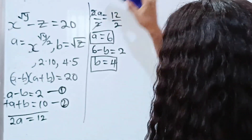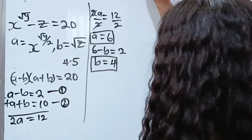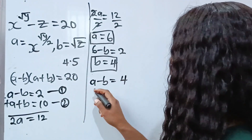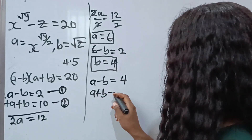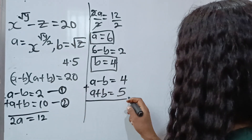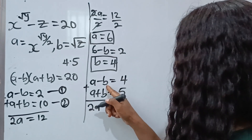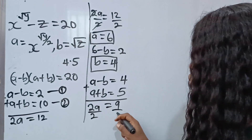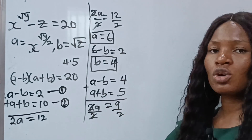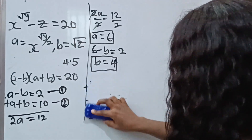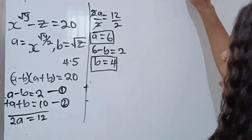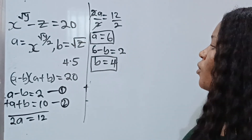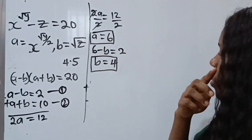For the third case, 4 times 5: a minus b equals 4 and a plus b equals 5. Adding, 2a equals 9, so a equals a fraction, which is non-natural. This case is not usable. Therefore, the only valid solution is a equals 6 and b equals 4.